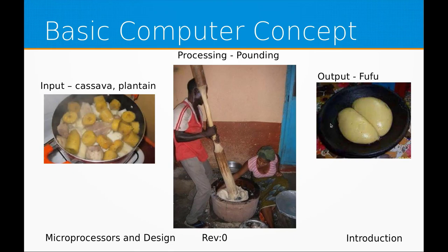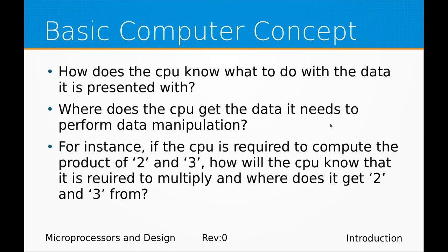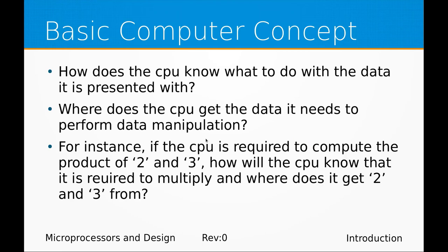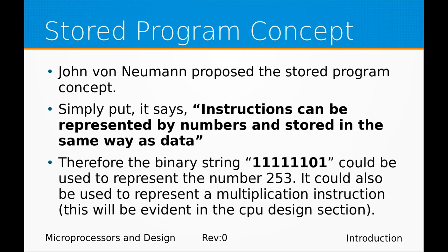With the fufu pounding example, the woman knows where to get the cassava from — it is in a separate plate — so she takes it and puts it in the mortar, and the man knows what to do. With a CPU, it is expected to perform data manipulations. A key question is: how does the CPU know what to do, and where does it get its data from?